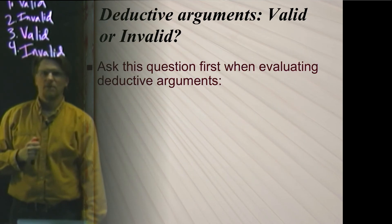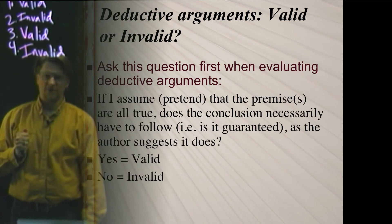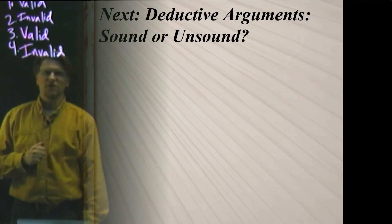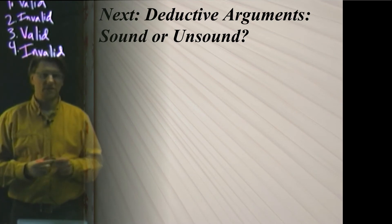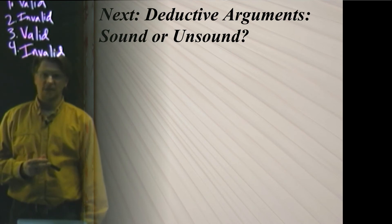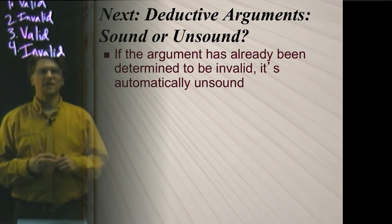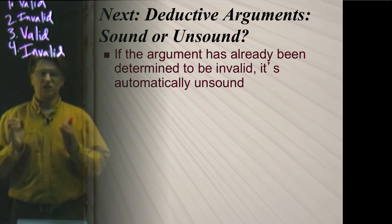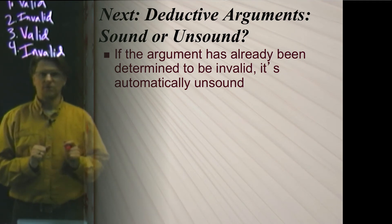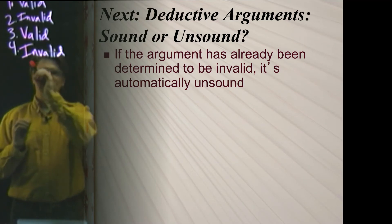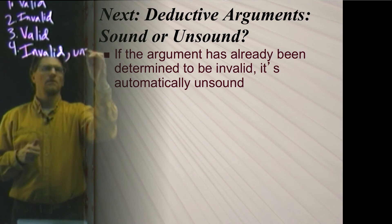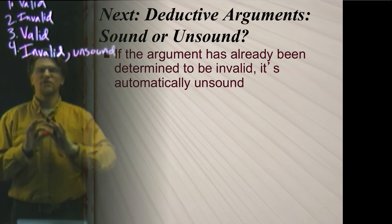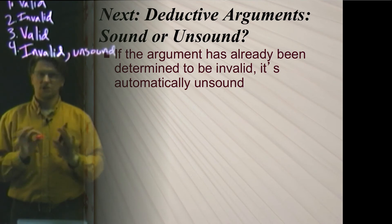Now that we've talked about validity and invalidity for deductive arguments, we can ask about the next level of evaluation: whether deductive arguments are sound or unsound. If an argument has already been determined to be invalid, it is automatically unsound. When we know something is invalid, it is automatically unsound — we don't have to think about anything else; it's just an automatic determination.